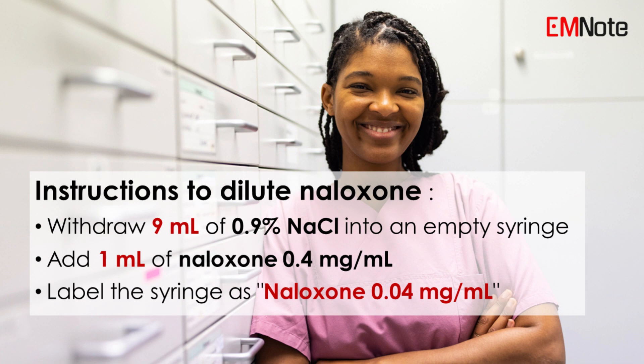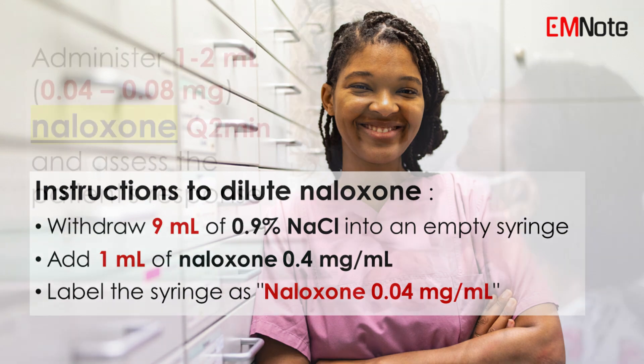To dilute naloxone, follow these instructions: 1. Withdraw 9 mL of 0.9% sodium chloride into an empty syringe. 2. Add 1 mL of naloxone 0.4 mg per mL. 3. Label the syringe as naloxone 0.04 mg per mL.